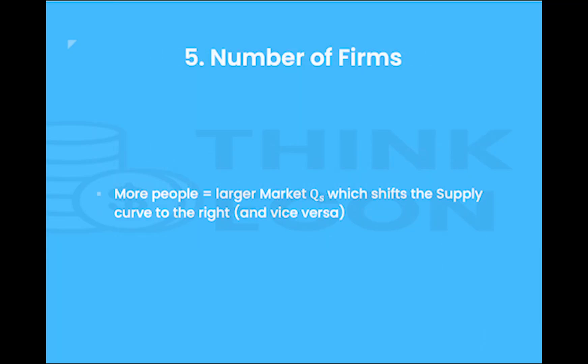Lastly, we have a pretty straightforward shift factor: the number of firms. As the number of firms producing goods in a given market increases, the total supply of goods in that market would increase as well. For example, suppose that there are two bakeries in your neighborhood. If a third bakery were to open up, that would increase the total supply of baked goods in the market and therefore shift the supply curve for baked goods to the right.